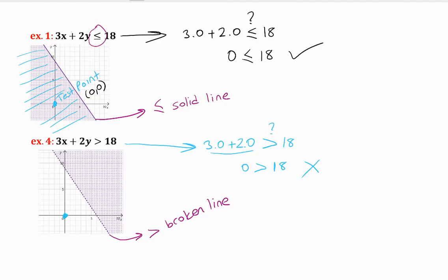So we are shading the opposite side of the test point, which is the right side. This graph is already drawn, but I am trying to explain what we are doing. Hopefully it helps, and thank you for watching.